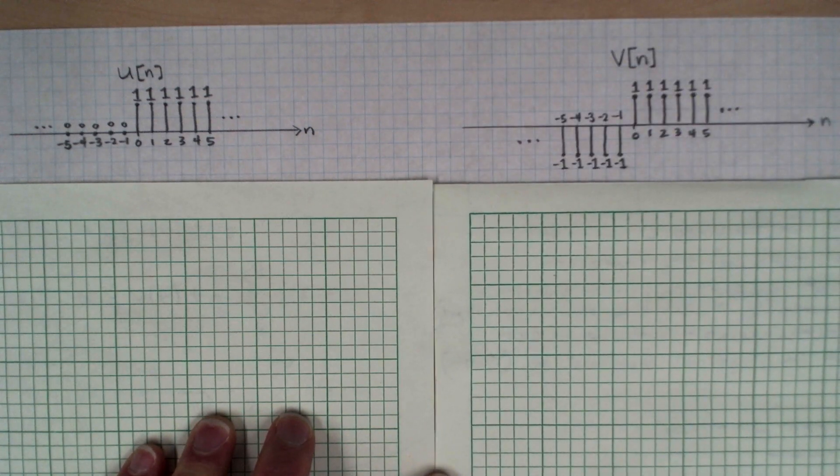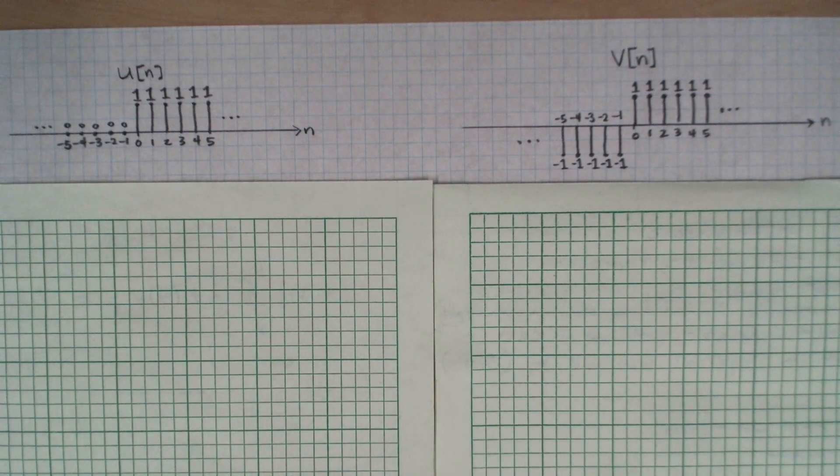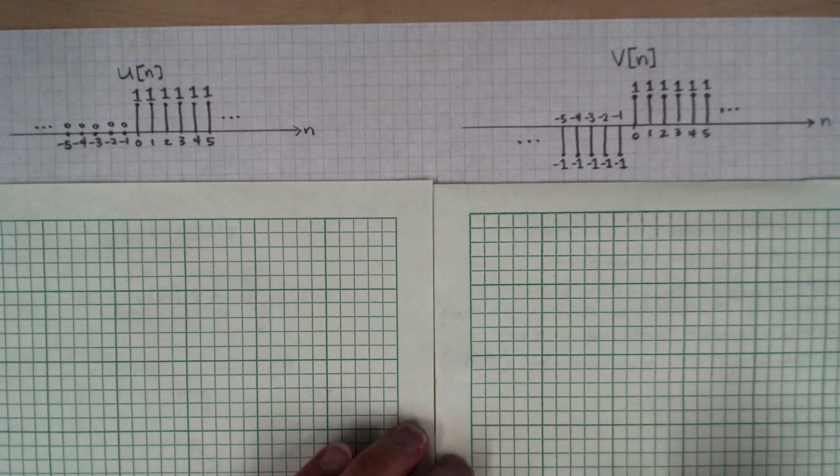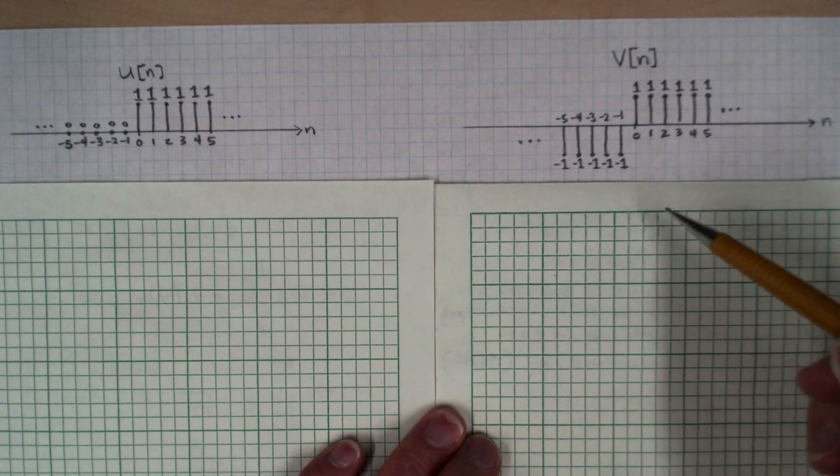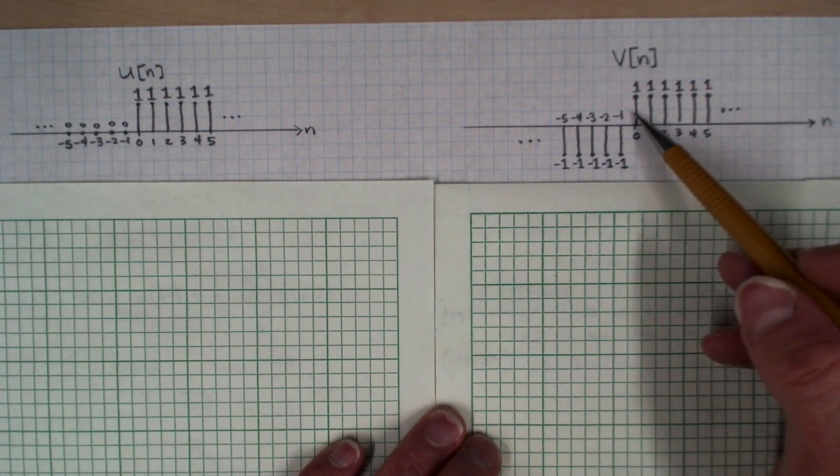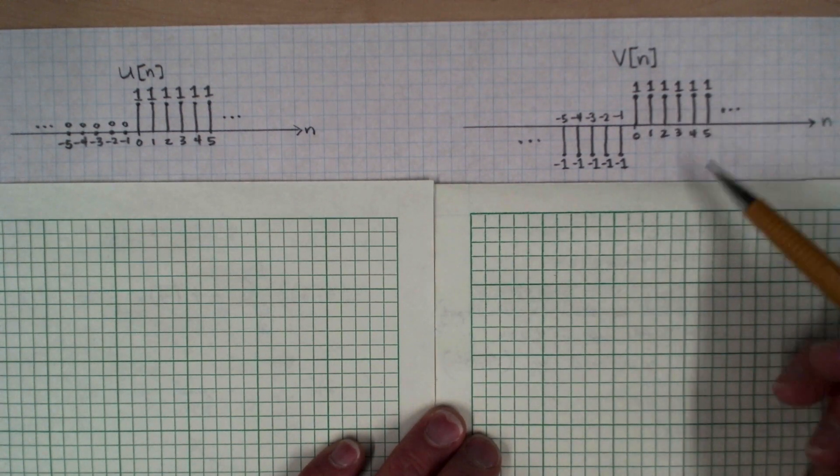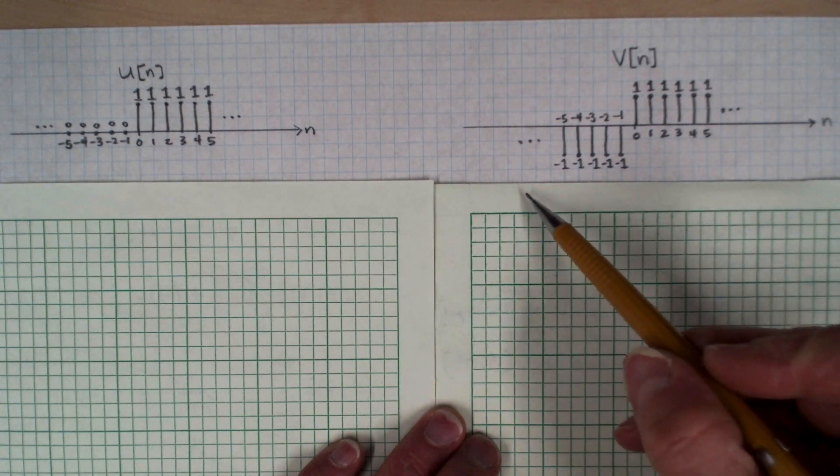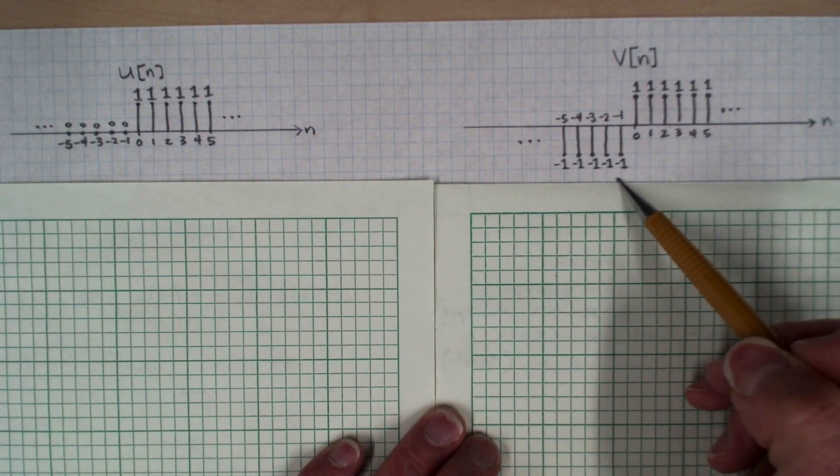To help us along the way, I have drawn another function that we're going to focus on first, calling it the sequence V. And it takes on the value one at time zero in all positive times, just like the unit step. But at negative times, it takes on the value negative one.